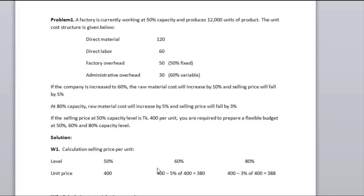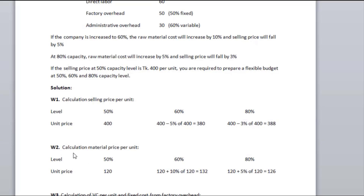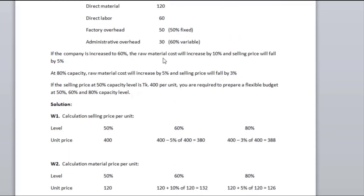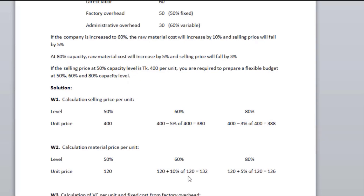So the selling price at 80% capacity is 388. Working two: calculation of material cost per unit. At 50% level, material cost is 120. At 60% level, material cost increases by 10%. At 80% level, raw material increases by 5%.